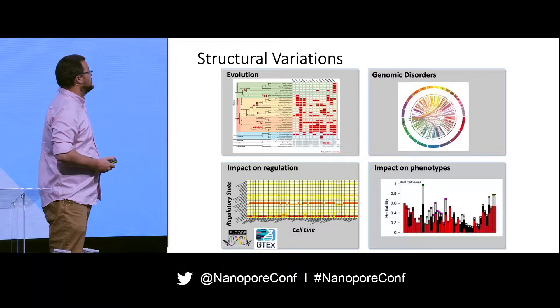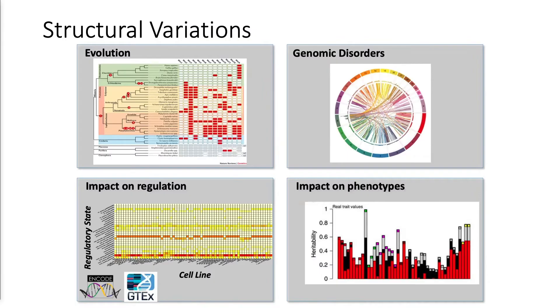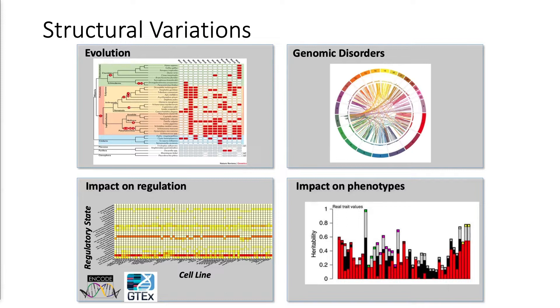Structural variants are really important. In evolution we can talk about gene gains and gene losses, and we have also identified multiple speciation events coming from structural variants. Today I'm more focusing on genomic disorders - for example, here you can see a cancer diagram of SKBR3, a HER2-positive breast cancer cell line. We're also studying cardiovascular disease, neurological diseases, and other diseases.